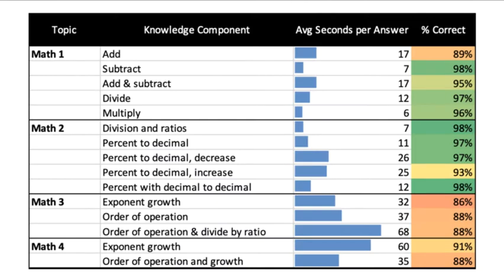Students tend to do well with basic arithmetic. They tend to not take very long to answer each question and score highly on the overall quizzes. However, on the higher levels of math, particularly those involving order of operation, students take much longer and have lower success rates.